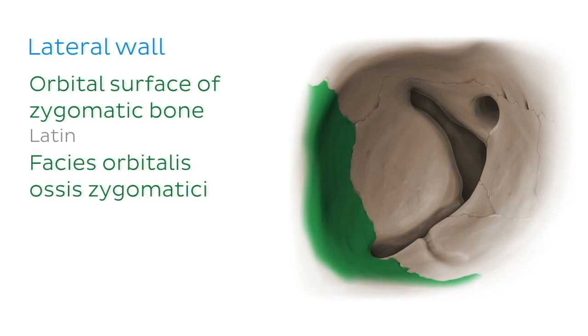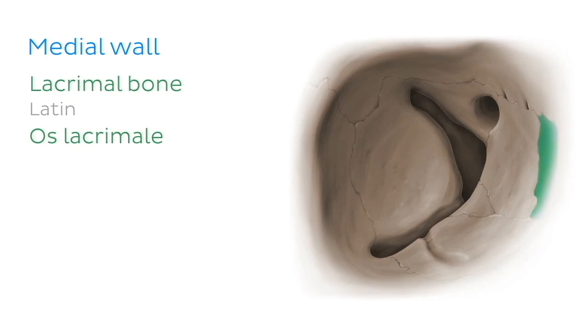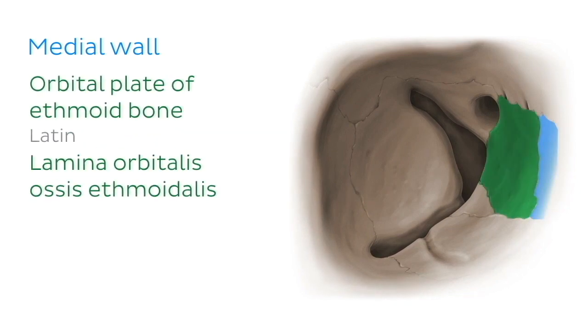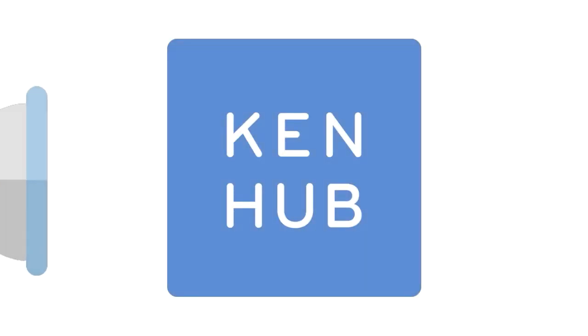The lateral wall of the orbit is made up of the orbital surface of the zygomatic bone, while the medial wall of the orbit is composed of two bones, the lacrimal bone and the orbital plate of the ethmoid bone. Within the medial wall are two foramina, the anterior ethmoidal foramen and the posterior ethmoidal foramen. This video is not over yet.